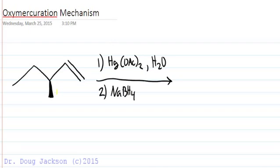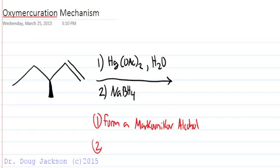But first of all, the things that we remember about oxymercuration that are important is that we form a Markovnikov alcohol, so addition to the more substituted carbon, and we prevent carbocation rearrangements.